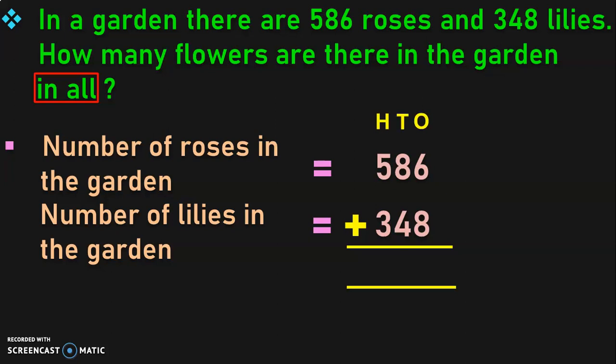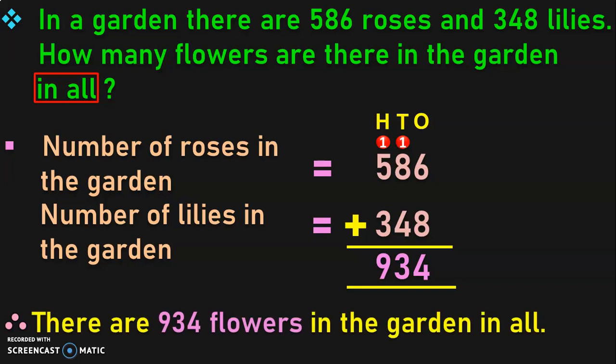Write down the place values and begin the addition from the 1's place. 6 plus 8 will give you 14 — retain 4 in the 1's place and take 1 as a carryover to the 10's place. Add the digits in the 10's place: 1 plus 8 is 9, and 9 plus 4 gives 13 — retain 3 in the 10's place and take 1 as a carryover to the 100's place. Add the digits in the 100's place: 1 plus 5 is 6, and 6 plus 3 gives 9. So 586 plus 348 gives 934. Therefore, there are 934 flowers in the garden in all.